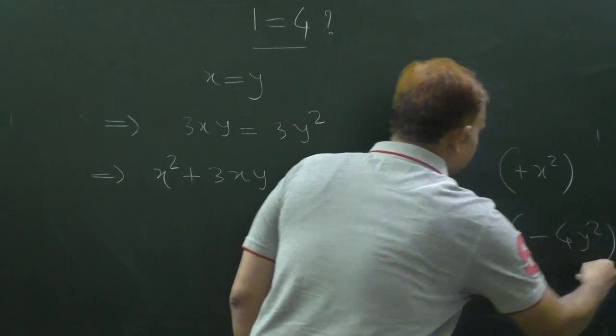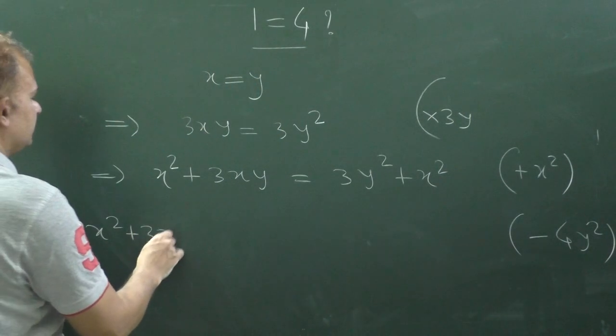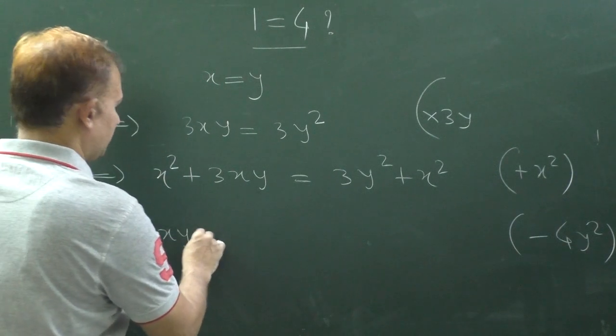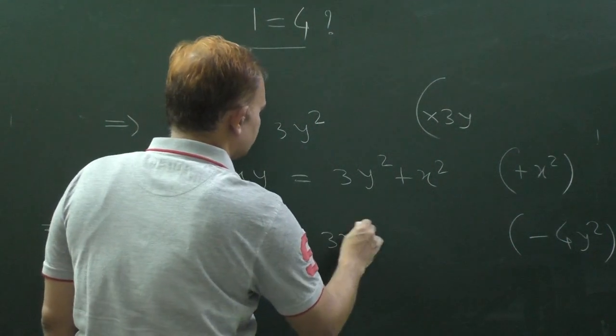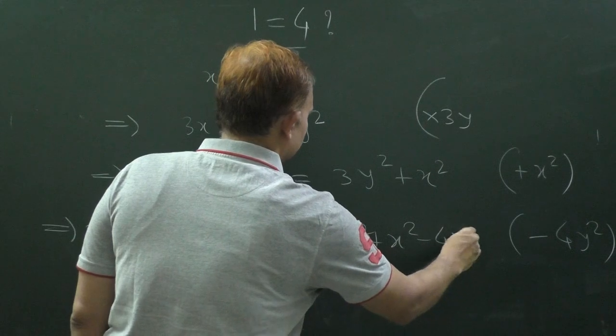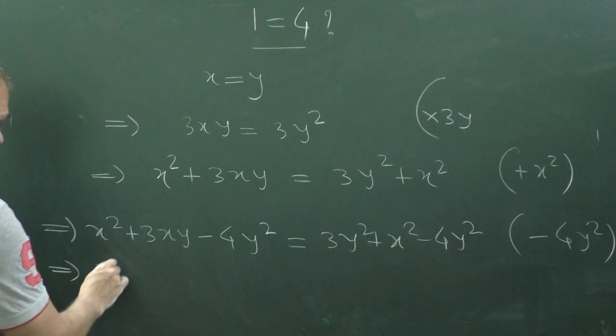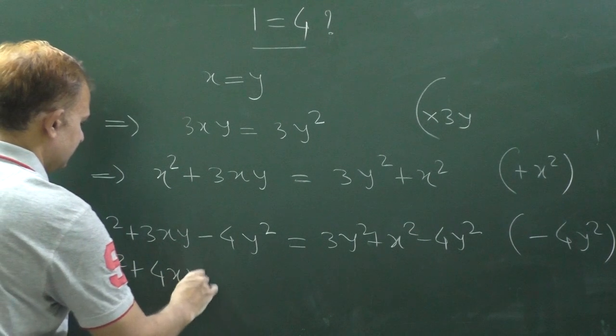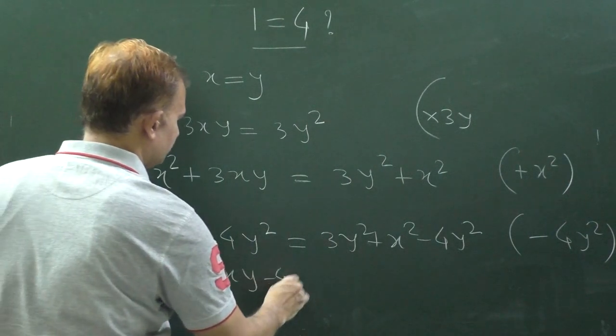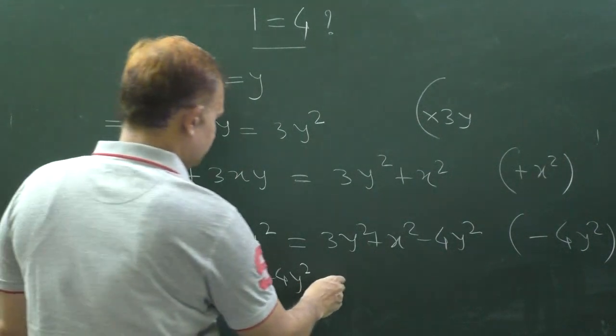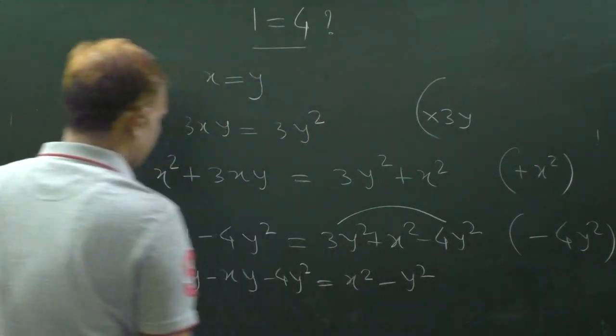So it becomes X square plus 3XY minus 4Y square. Right side, 3Y square plus X square minus 4Y square. So this we can write X square plus 4XY minus XY minus 4Y square is equal to X square, 3Y square minus 4Y square.